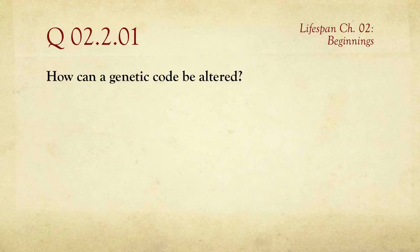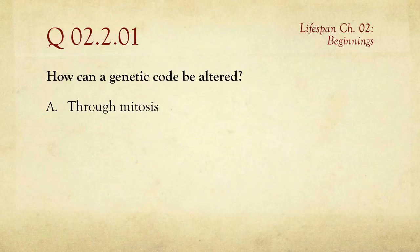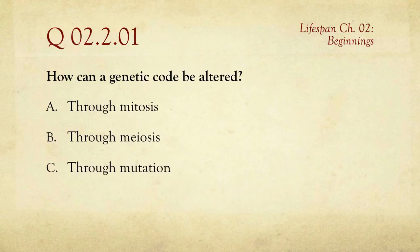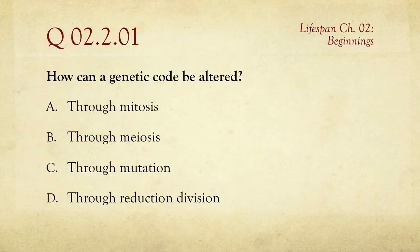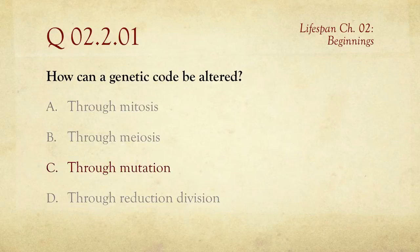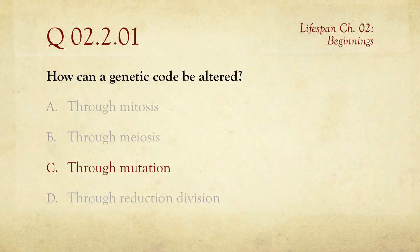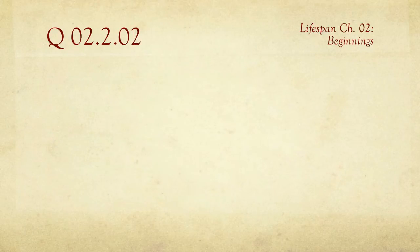The first question on this quiz is: how can a genetic code be altered? The choices are A, through mitosis; B, through meiosis; C, through mutation; or D, through reduction division. Mitosis and meiosis simply have to do with cell division. The answer is mutation — a genetic code is inherited from the parents, but a mutation means a person can have something in their genes that comes from neither their father nor their mother. Mutation is a random alteration.